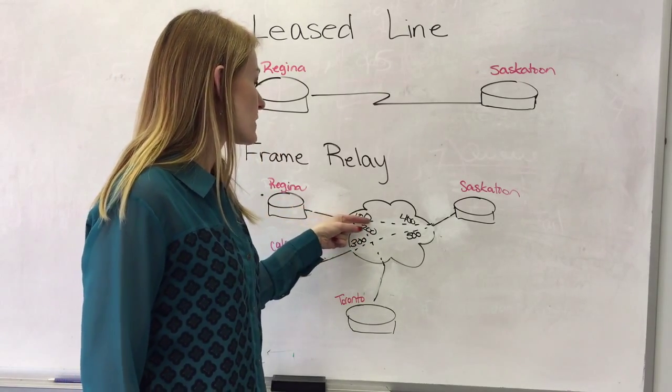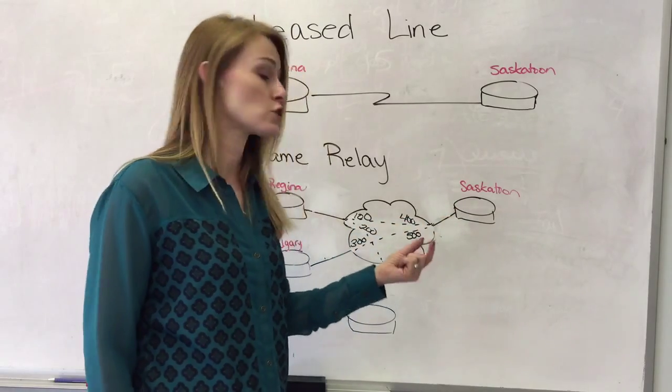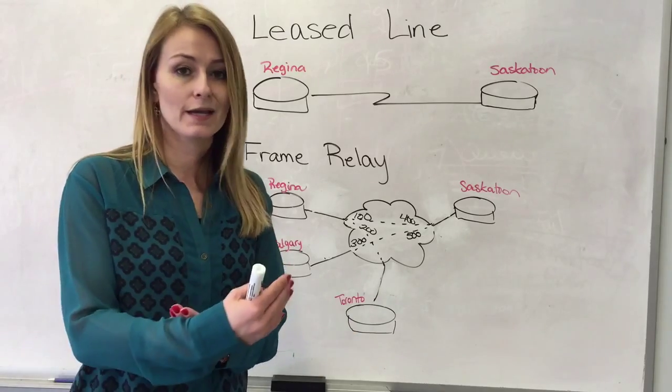So it's going this way and then as it traverses over here it actually comes into Saskatoon with a DLCI label of 400 because that's what it came in through.